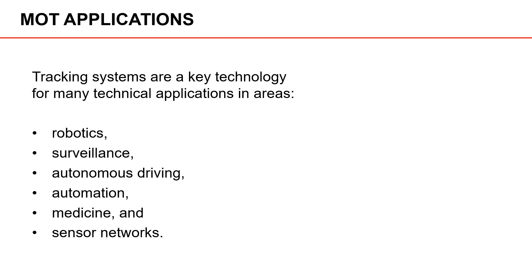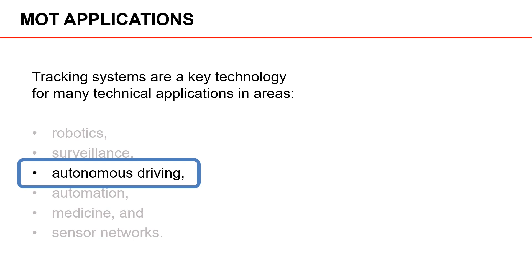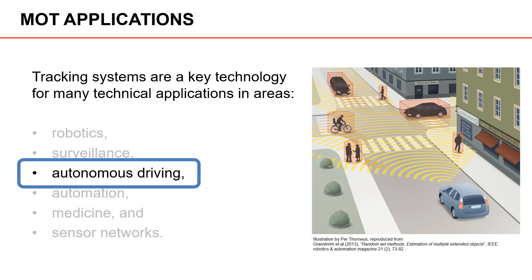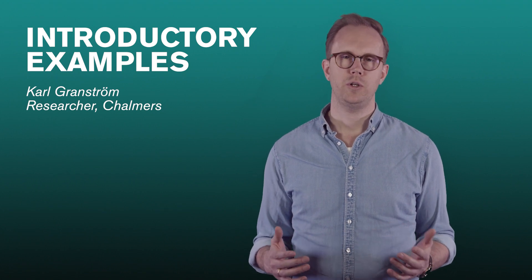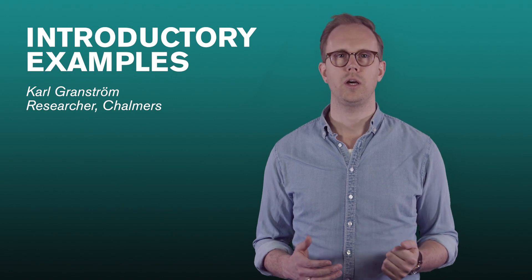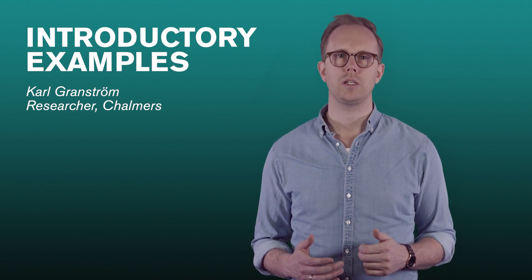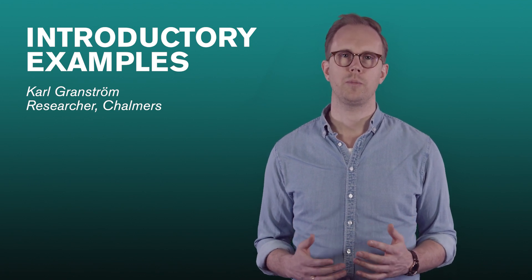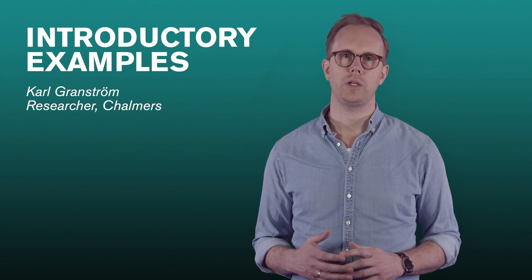Tracking systems are a key technology for many technical applications in areas such as robotics, surveillance, autonomous driving, automation, medicine, and sensor networks. This course focuses on automotive applications. Therefore, we will illustrate the concepts taught in the course using examples from autonomous driving. Typically, in such a scenario, we have a driverless car. In order for it to function in an urban environment, it has to keep track of all the moving objects, such as cars, bicyclists, and pedestrians. Although we are going to focus on automotive applications in this course, I would like to point out that the theory, the concepts, and the methods that we discuss in this course apply generally. So, what you learn from this course can be applied to many different tracking applications. Thank you for watching.